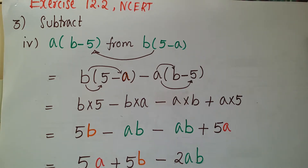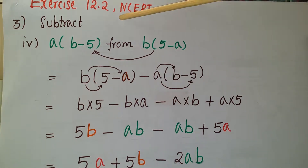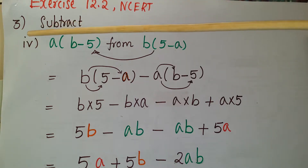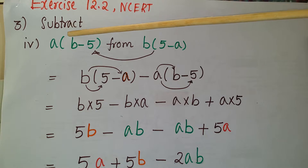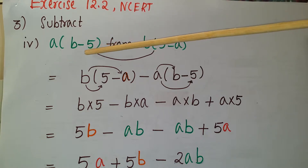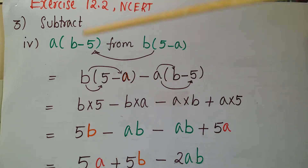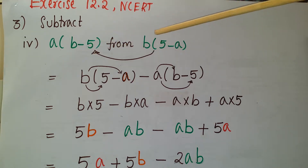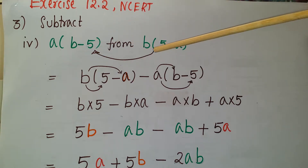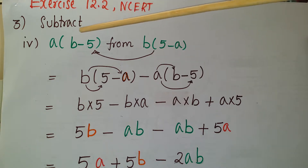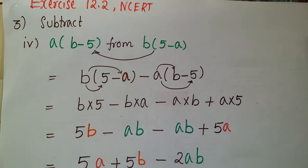Hello everyone, this is the third problem from exercise 12.2 from NCRT — actually it's the fourth problem. We have to subtract a into b minus 5 from b into 5 minus a. These are two algebraic expressions, and from this expression we have to subtract this expression. So first we have to write this.